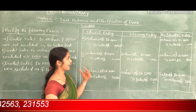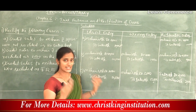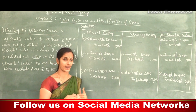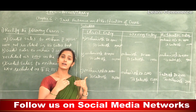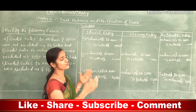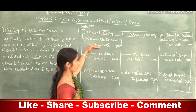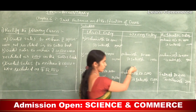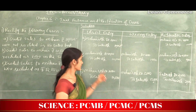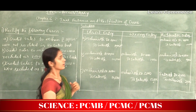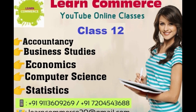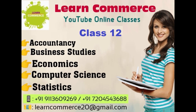For easy understanding, we can rectify errors in this way. But actually, we have to pass the rectified entry in the format of a journal, with narration and amounts in the respective debit and credit columns. In the next class, we will study more on this same concept. Thank you for watching this video. Don't forget to like our video and subscribe to our YouTube channel for all updates.